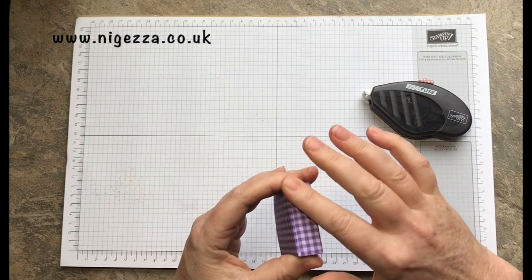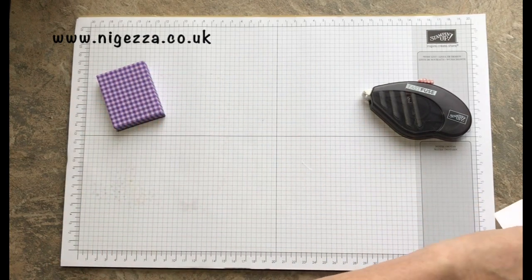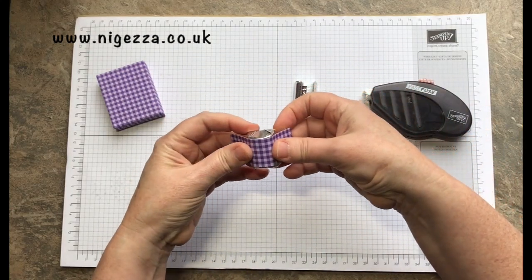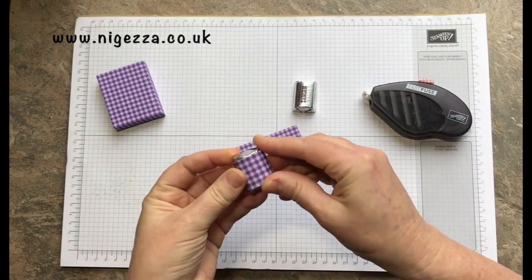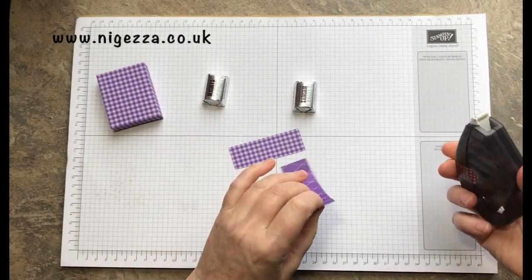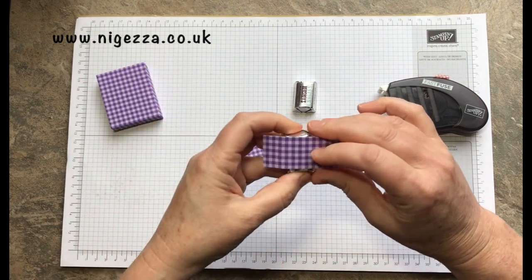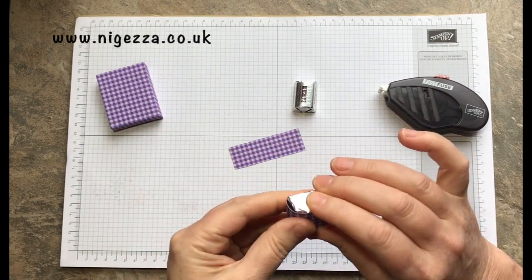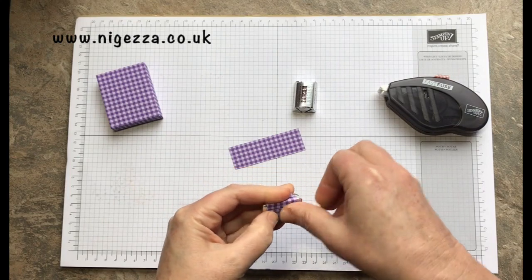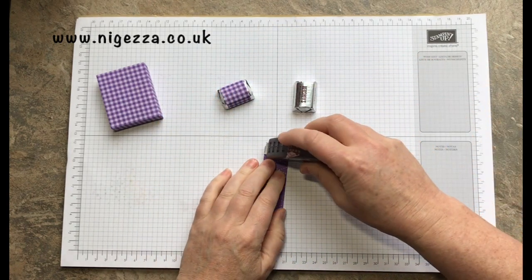Now I've got to make sure I got the right side. That bit is the back so I want that bit to go forward. I'm gonna put some fast fuse on these little flaps because I like to sandwich them in the middle, even though it's a really small treat box and you can't really see down it too well. That's just what I do.